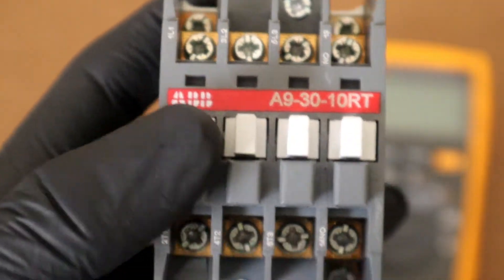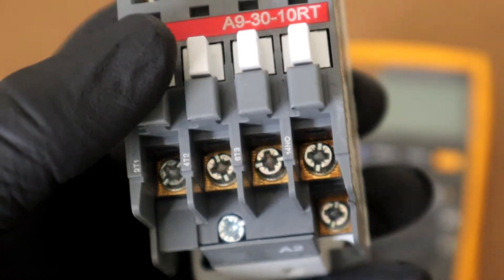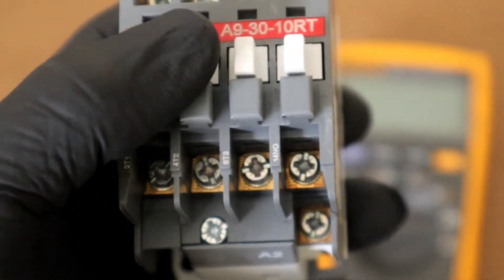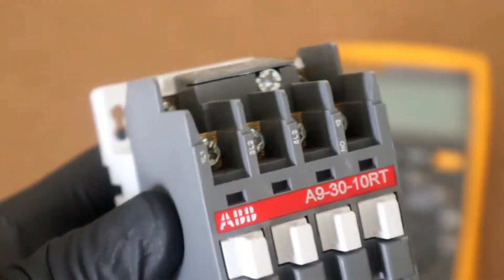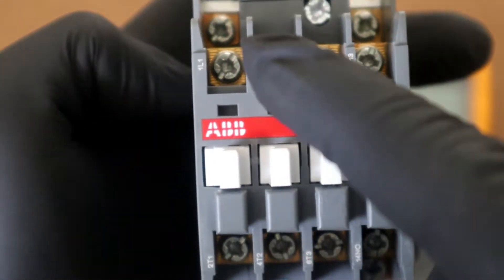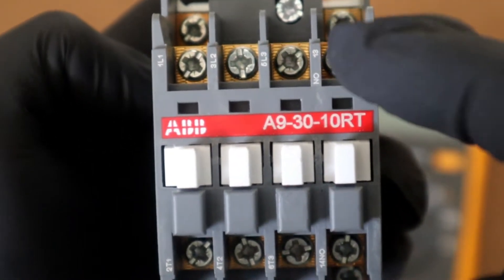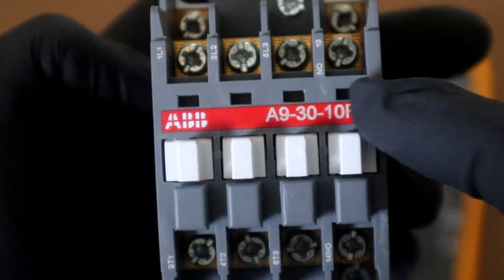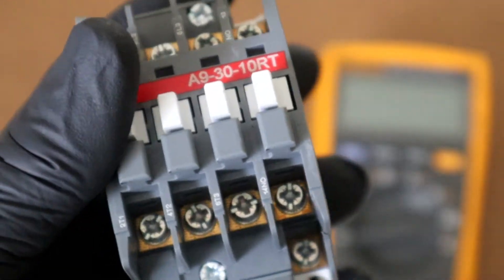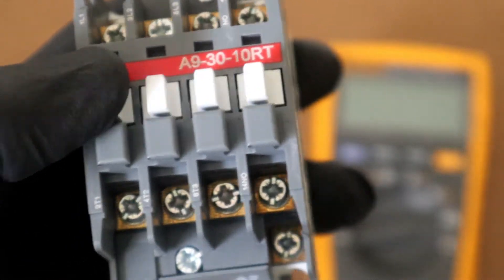In testing a contactor, high ohms nearing infinity when the contactor is open. In its normal state when it's open, if we test across L1 to T1 or L2 to T2 or L3 to T3 or across our normally open contact we should have a very high resistance reading or an open line resistance reading.